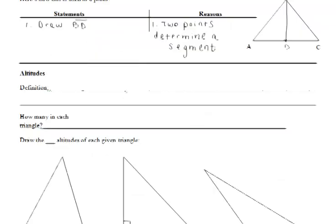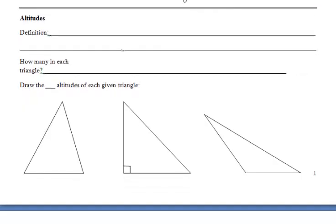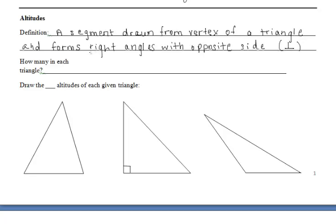Next, we'll be focusing on altitudes and medians. Make sure you remember the difference between the two. First, we'll talk about altitudes. Altitudes is going to be a segment that's drawn from the vertex of a triangle and forms right angles with the opposite side, or it's perpendicular to the opposite side. Since we have three vertices in each triangle, that means that we have three altitudes that we can draw in each triangle. So we have three total. So what I'd like you to do at this point is to draw in the three altitudes of a given triangle.